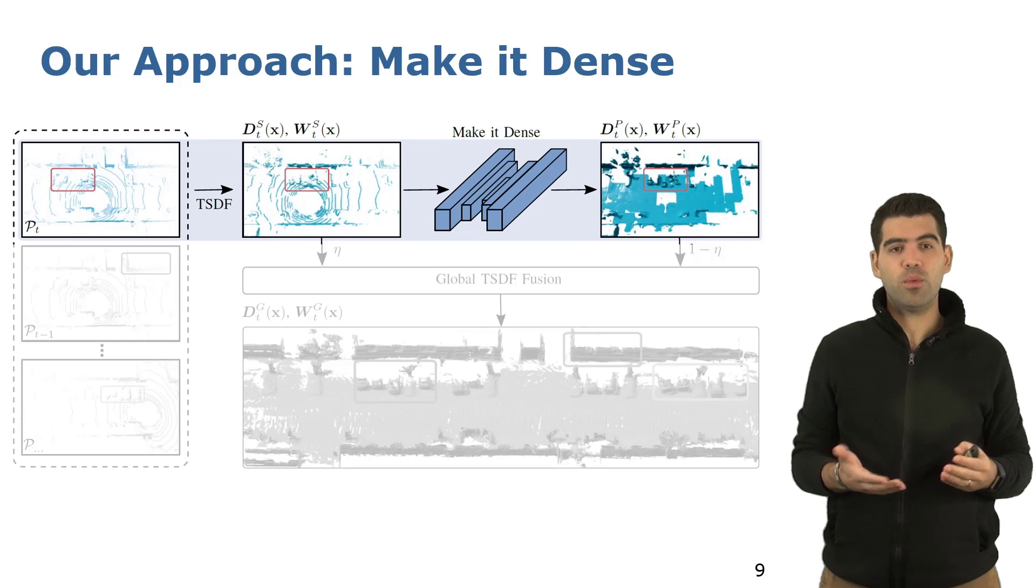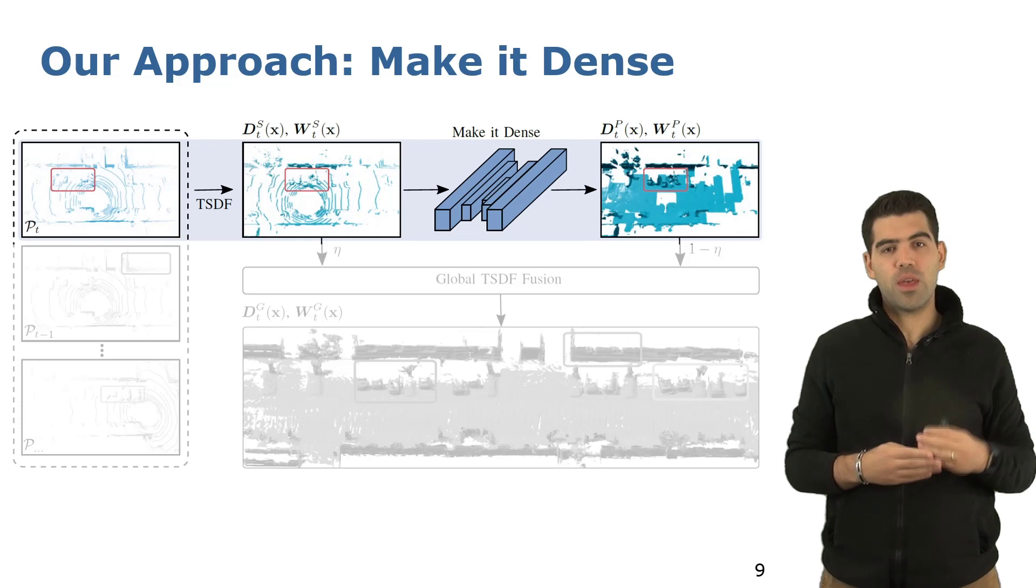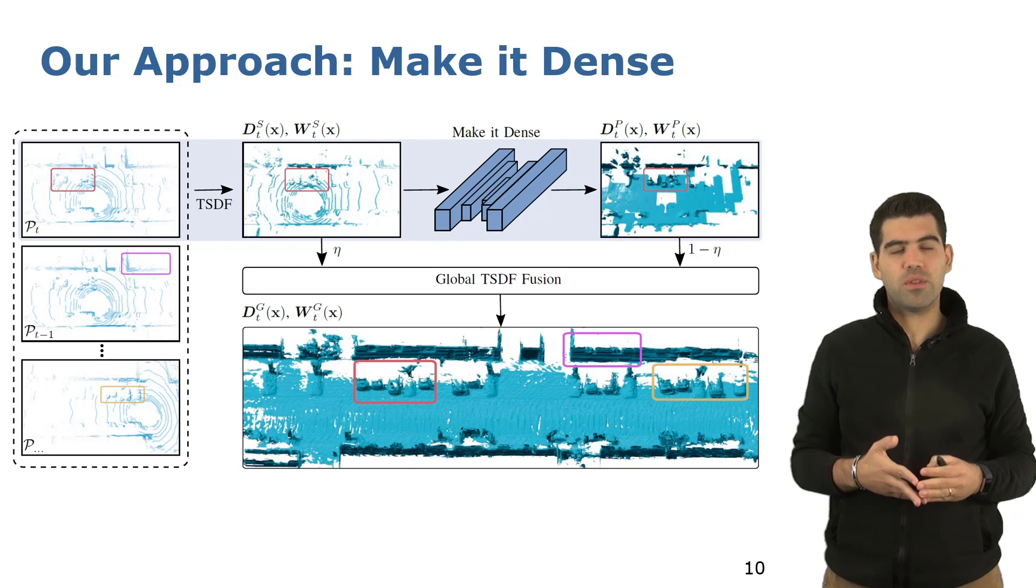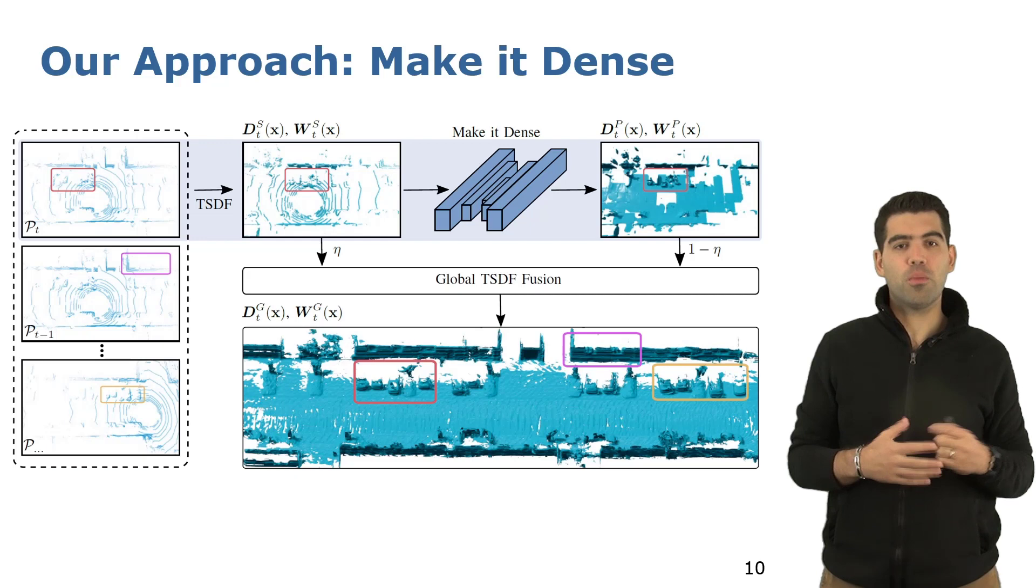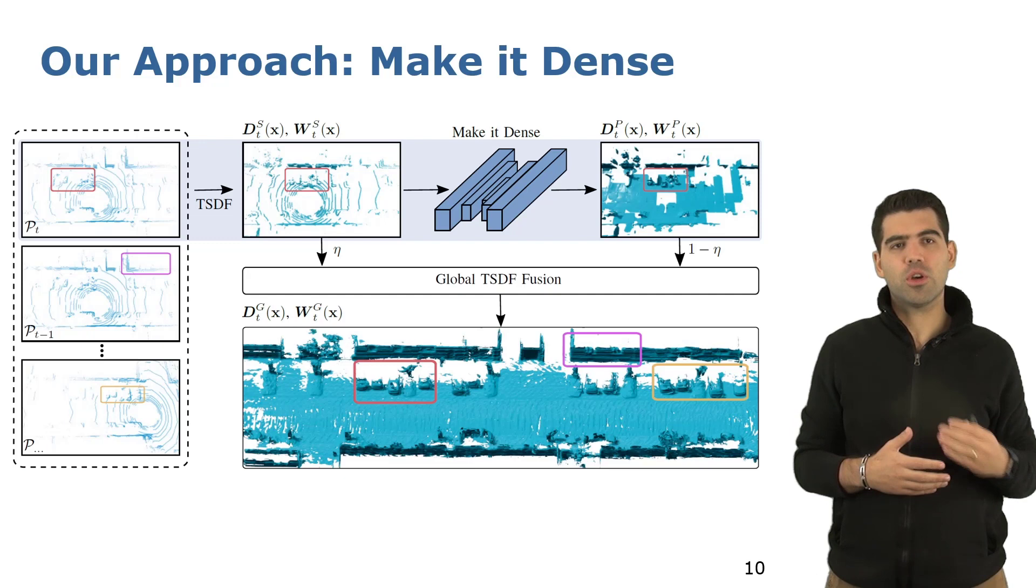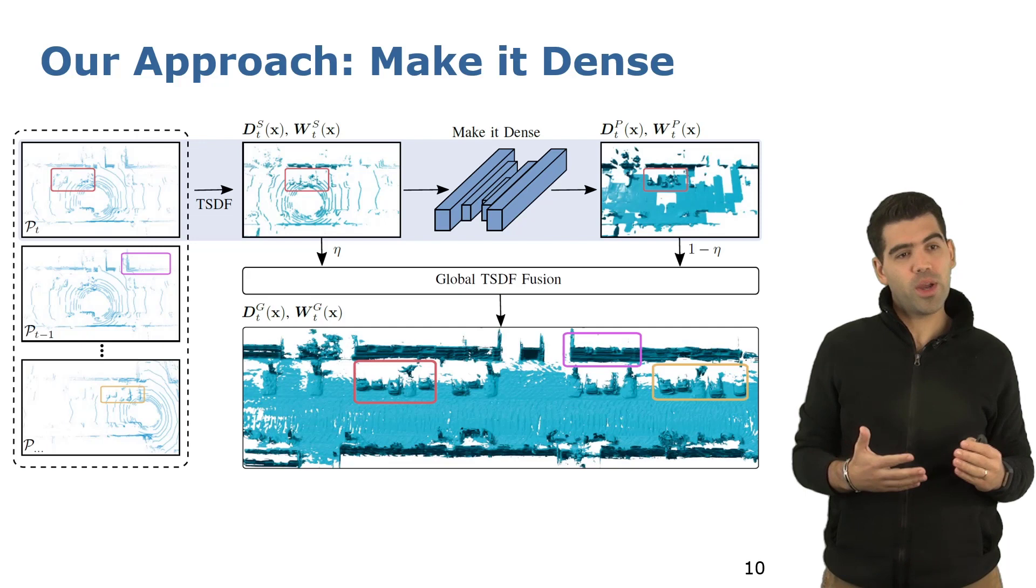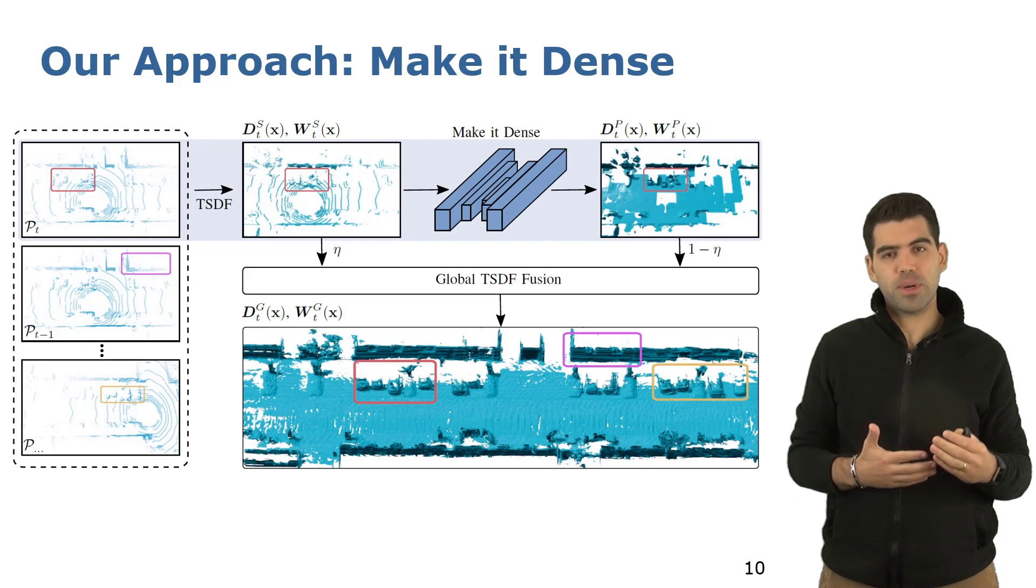Now we need to provide a way to combine these two data sources to avoid integrating the same measurement twice into the map. To achieve this, we fuse both TSDF volumes into the global map representation by employing a normalization factor called eta. The result of our approach is a dense map obtained from the combination of both TSDF volumes. We repeat this process for all incoming scans into the system. Please note that our approach does not require the robot to move slowly through the environment, as our CNN can help to deal with the sparsity of the low-resolution LiDAR.